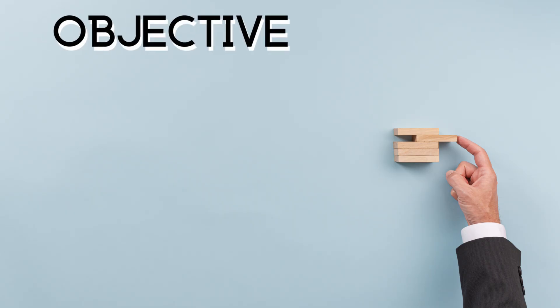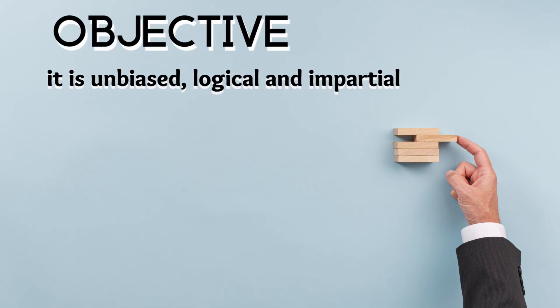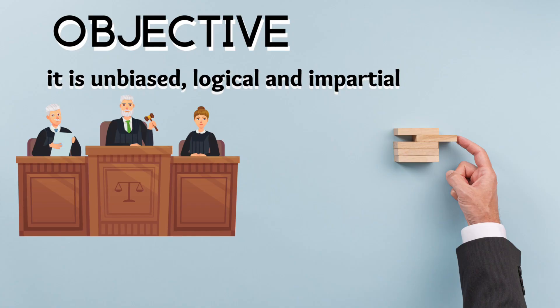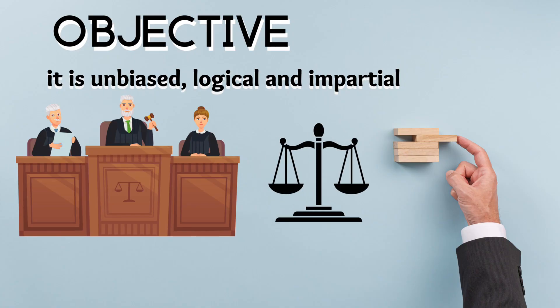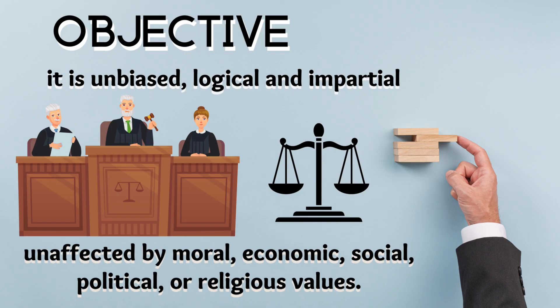Objective: This refers to research being unbiased, logical, or impartial. An objective researcher is like a judge who attempts to give a fair hearing to both sides of a legal dispute — listening to both sides without giving undue consideration to either. All findings are based on real-life situations, and research should be unaffected by moral, economic, social, political, or religious values.